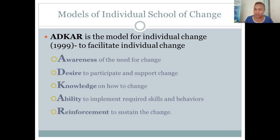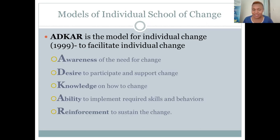We're going to look at one model of the individual school of change — the ADKAR model. ADKAR is an acronym with five letters: A for Awareness, D for Desire, K for Knowledge, A for Ability, and R for Reinforcement. This model is used especially in cases where change has to begin with individuals — where people have to buy into the change process as individuals, not as groups.